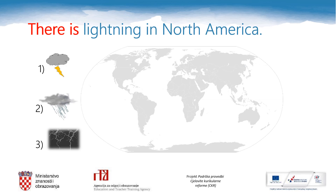There is lightning in North America. Number one is thunder, number two is rain showers, and number three is lightning — this is what we need. The continent is North America. There is lightning in North America.